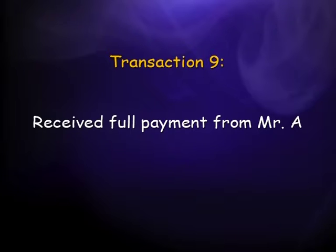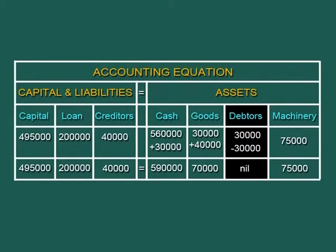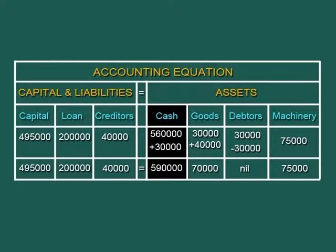Ninth transaction: we received payment from Mr. A. As we receive payment, debtors decrease by rupees 30,000 — Mr. A is no longer a debtor — and cash increases by 30,000. One asset decreases and another increases. Cash becomes rupees 5,90,000 while debtors become zero. The sum total of all assets — 5,90,000 plus 70,000 plus 75,000 — equals rupees 7,35,000, matching total liabilities and capital of rupees 7,35,000.